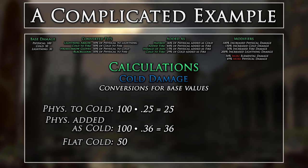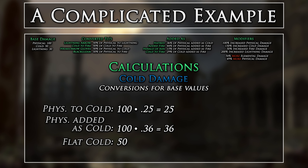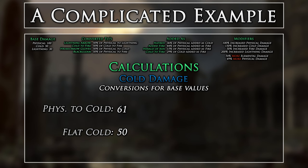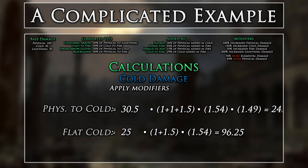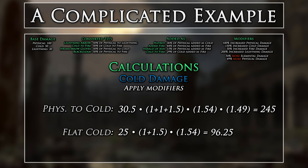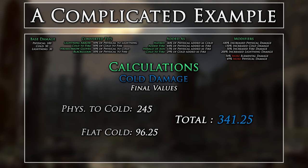Cold is a bit more complicated, as we now have added as conversions and it is in the middle of a conversion chain. Again, we will first want to complete our conversions to get our base numbers. Here, we can get all of our physical to cold and physical added as cold, and then we can add these together, as they are both coming from the same source — just different types of conversion. Now we have to get our remaining cold damage after we convert 50% of it to fire. Now that we have our final cold bases, let's apply modifiers to them — adding increased modifiers together and multiplying by all more modifiers. For our converted damage, it will benefit from all damage types that it was and now is. For our flat damage, we will only benefit from what damage type it currently is. Finally, after we have our final numbers, we can calculate our total cold damage.